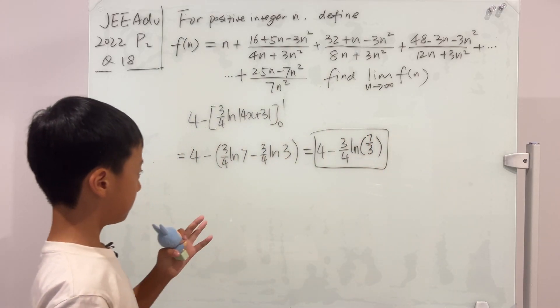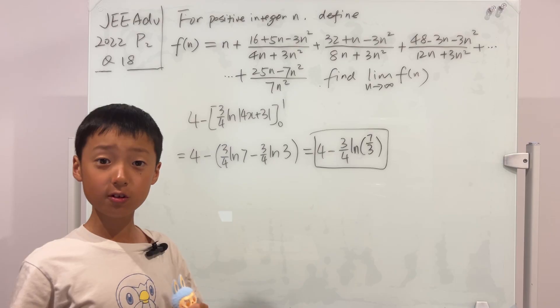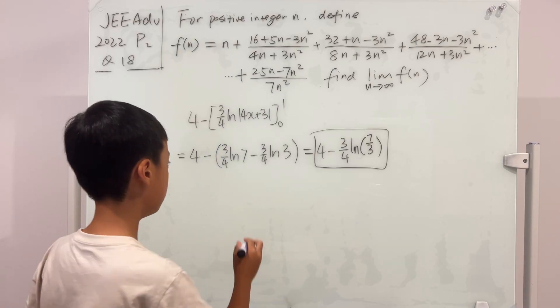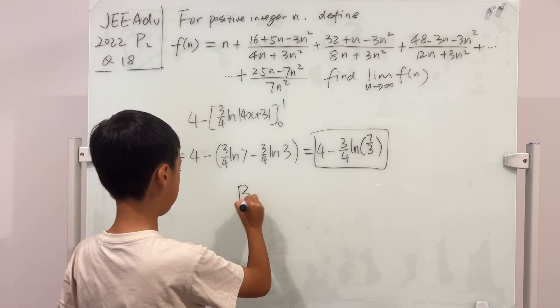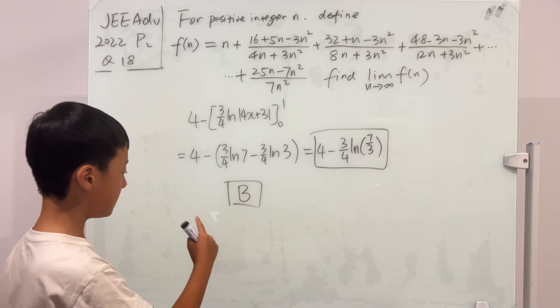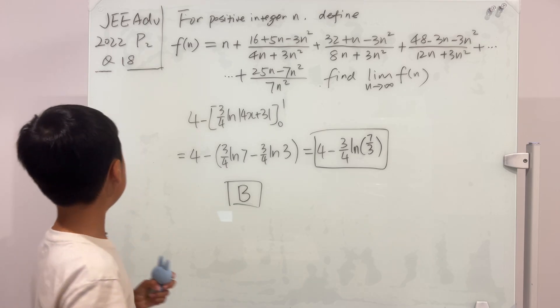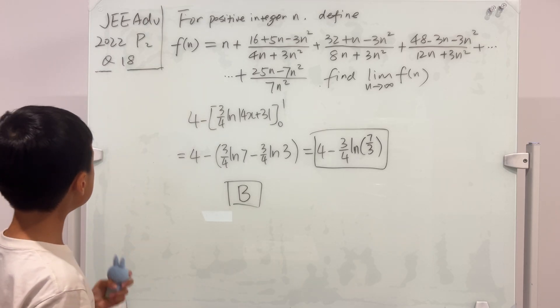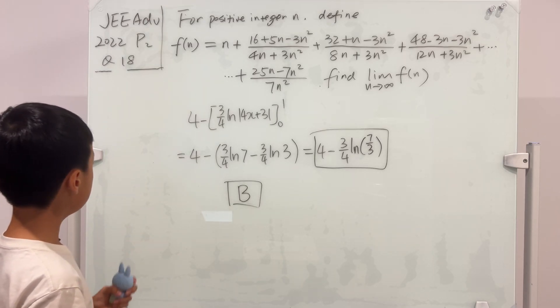Well, this technically isn't the final answer, because this question has choices. So the formal answer will not be this, it will actually be B. So B is the final answer of this JEE Advanced 2022 Question 18 of Paper 2.